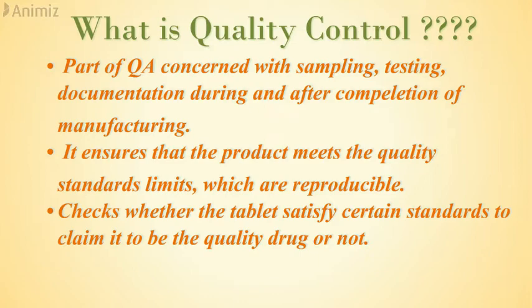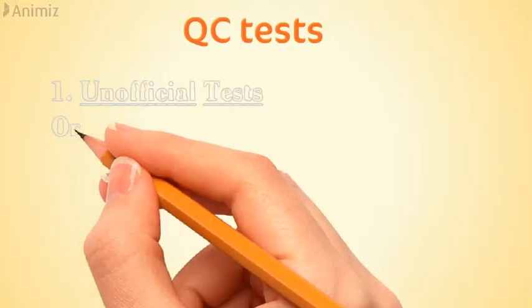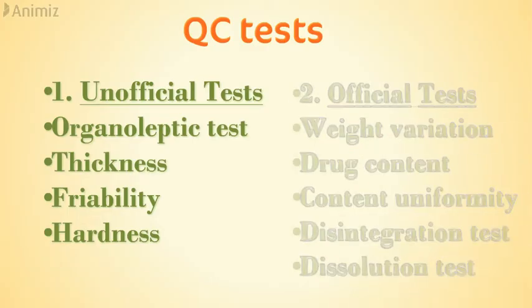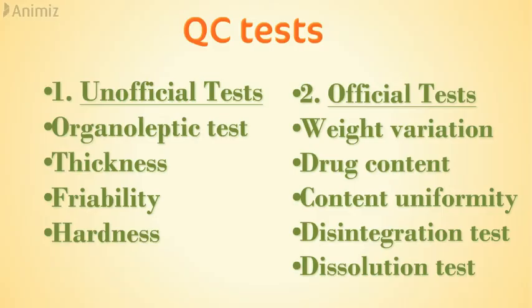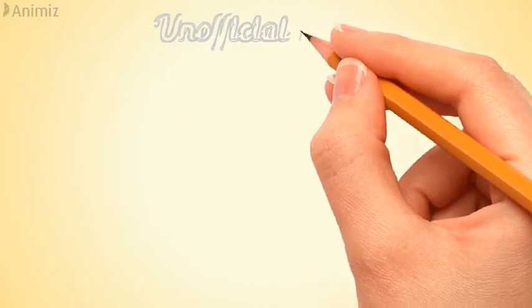There are two types of QC tests for tablets. Unofficial tests include organoleptic test, thickness test, friability, and hardness. Official tests — mentioned in pharmacopoeias like USP, IP, or BP — include weight variation, drug content, content uniformity, disintegration test, and dissolution test.